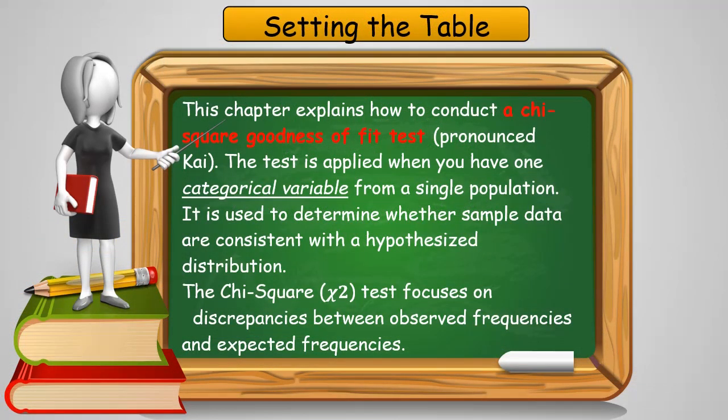In this chapter, I'm going to explain how to conduct a chi-square goodness-of-fit test. This is a test that we're going to apply when you have one categorical variable from a single population, and it's used to determine whether the sample data are consistent with a hypothesized distribution.